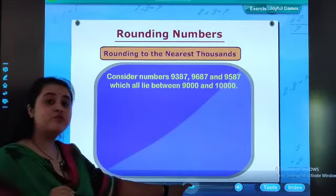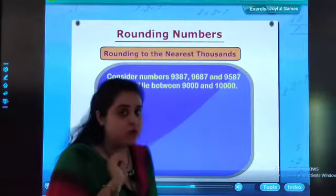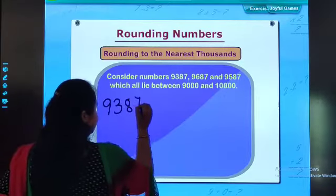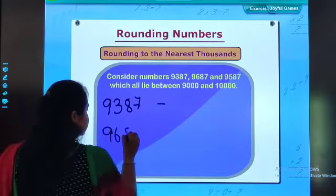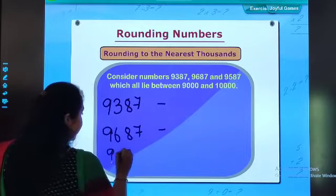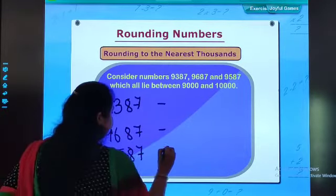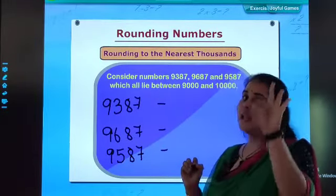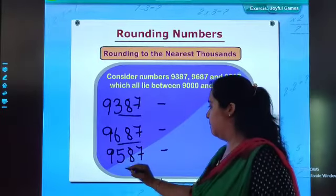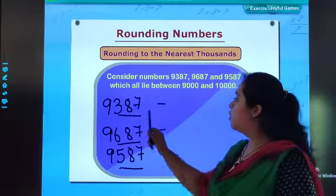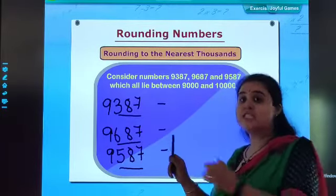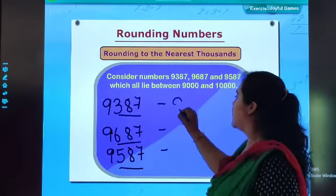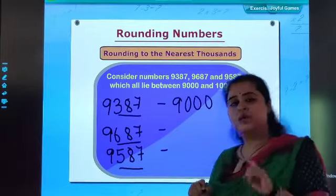Now, when it comes to rounding to nearest thousands, the first number is 9387. When it comes to thousands, we will focus on the last three digits. 387 is less than 500, so the first number will be rounded off to 9,000.